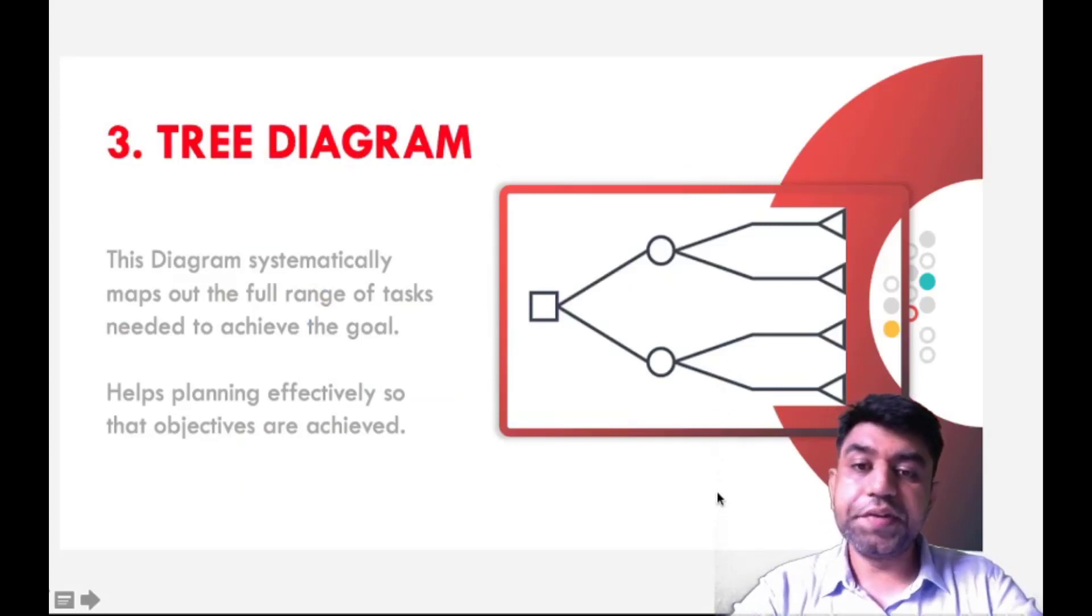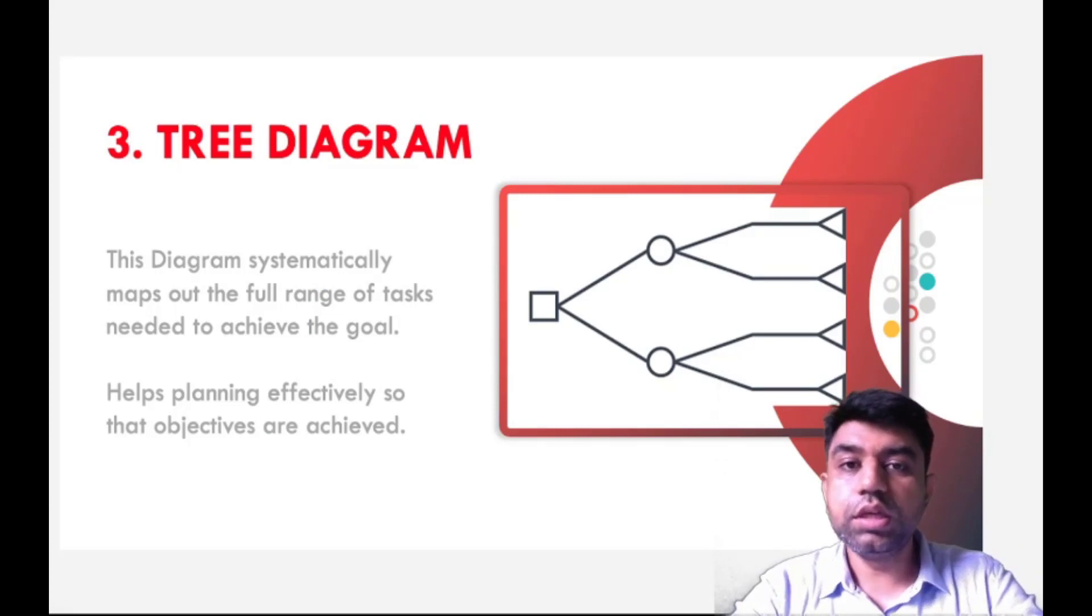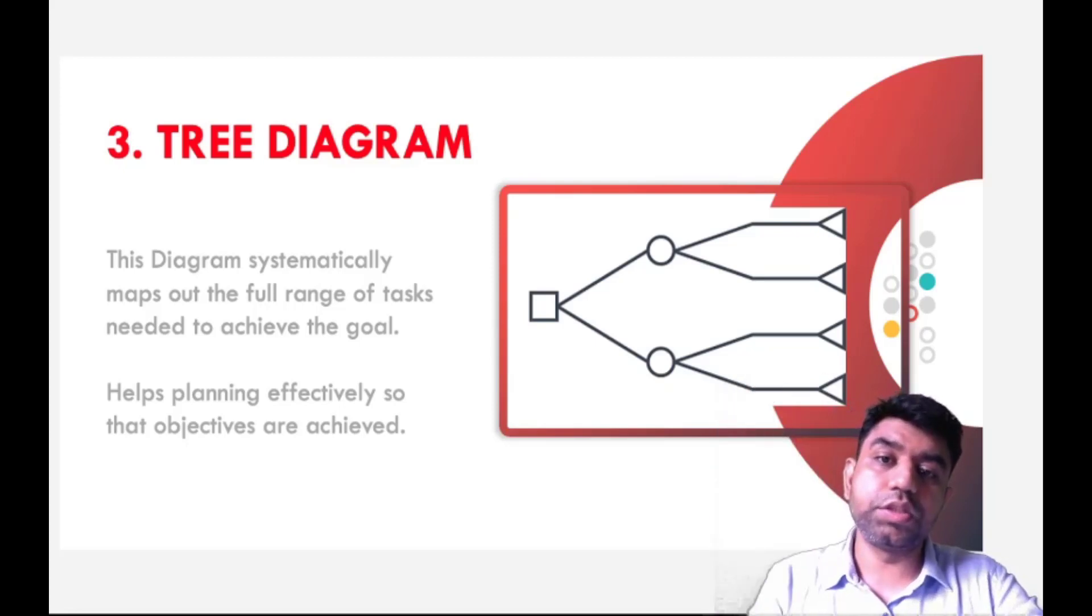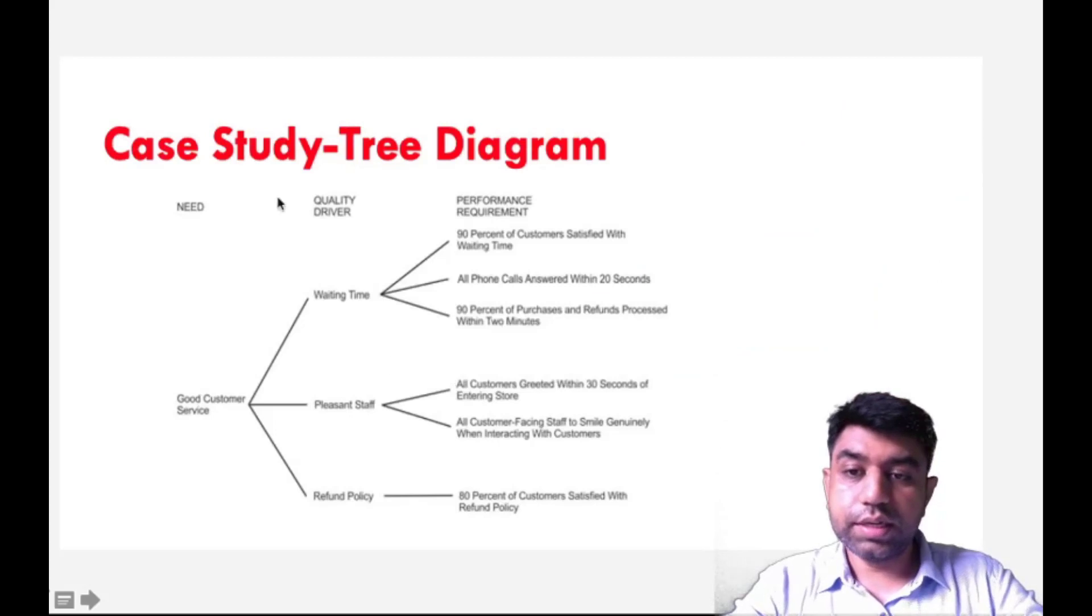The third diagram is Tree Diagram. About this we already know, because when we were discussing about the tools and techniques to improvise the quality, we understood fault tree analysis. This is a similar analysis, but in that fault tree analysis we were having a vertical representation of a tree. But in this case we are having a horizontal representation. Nothing else. Otherwise the basic concept is same. The diagram represents or maps out the full range of tasks needed to achieve the goal.